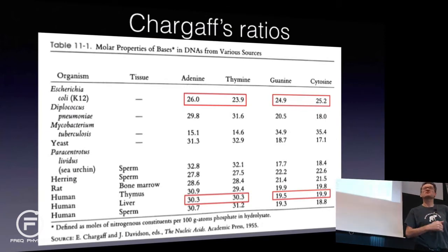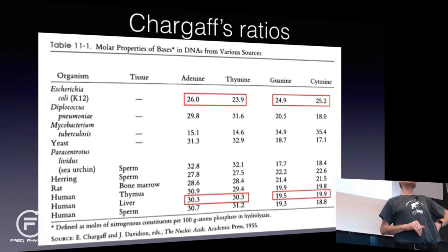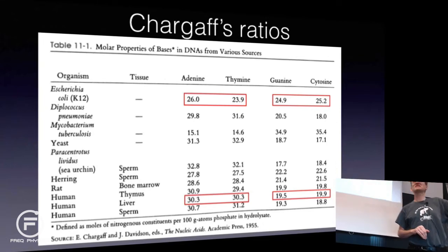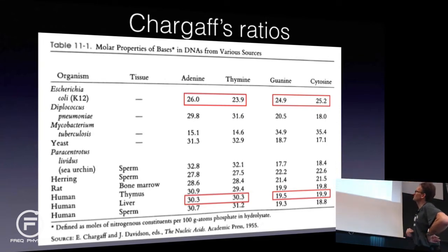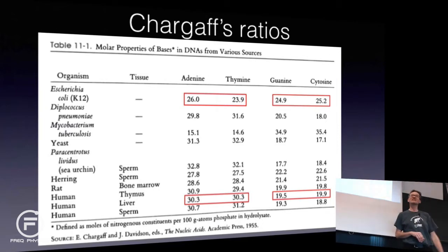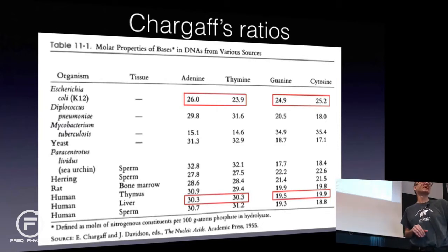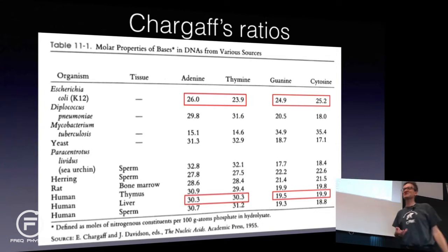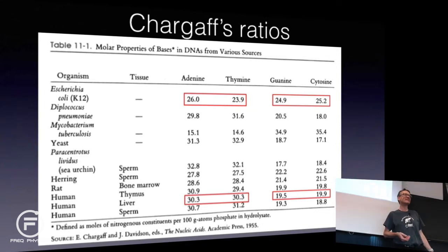This is the problem for physicists — you expect to see numbers with 14 decimal places. But 26.0 and 23.9: is that the same? Yes. That's how a biophysicist thinks. It's just a 5% measurement error — that's awesome.